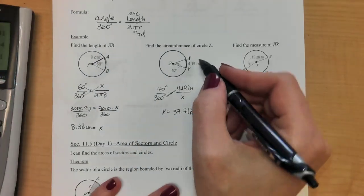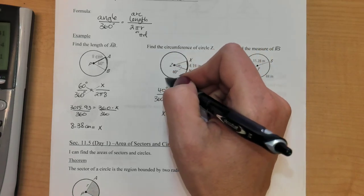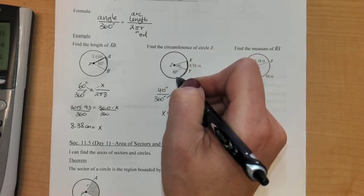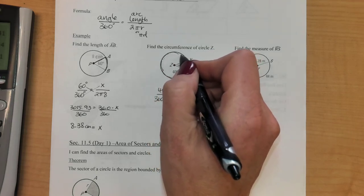And then again look at your picture and see if it makes sense. If this is 4, does it make sense that the whole thing could be 37? So like there would be another 4 and 4 and 4. Yep, looks like it's going to work out just fine.